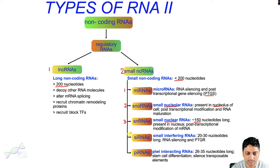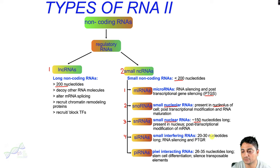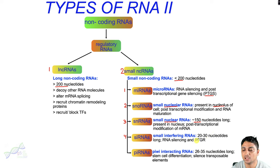The fourth type of small non-coding RNAs are siRNAs, known as small interfering RNAs. These RNAs are around 20 to 30 nucleotides long and they are responsible for RNA silencing and also in the post-transcriptional gene regulation.